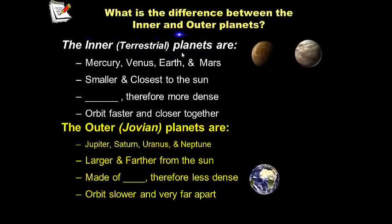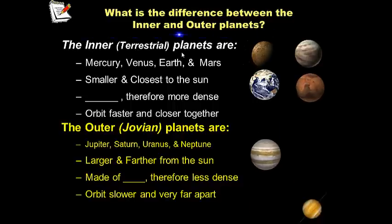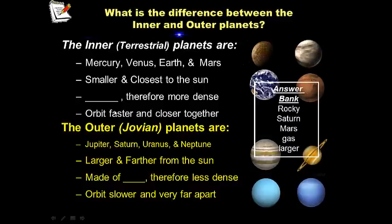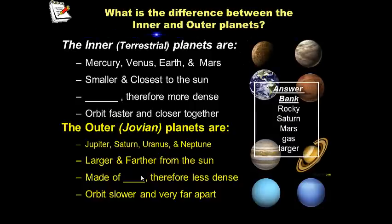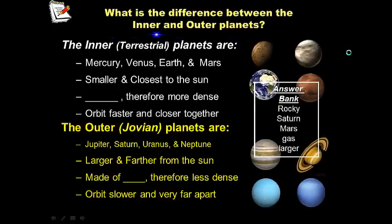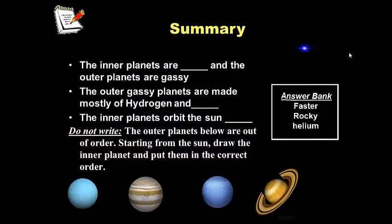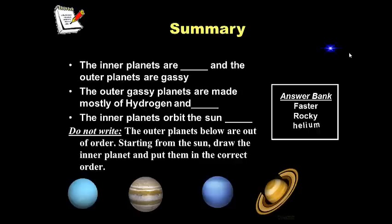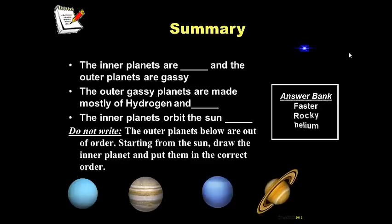The last slide for your notes today is the comparison between inner and outer planets — a very important slide. Make sure you write all of it, read it, determine which words go in the answer bank, and fill them in on your notes. Pause the video when you're ready to write. For your summary box, you're welcome to write your own summary or use the provided one. Either way, the summary box needs to be completely filled with words, pictures, or whatever you'd like — it's worth 20 points.